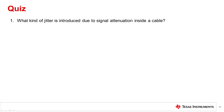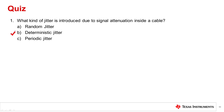Let's take a quick quiz. Number 1: What kind of jitter is introduced due to signal attenuation inside a cable? A. Random jitter. B. Deterministic jitter. Or C. Periodic jitter. The answer is B, deterministic jitter. Since signal loss of a cable is defined and deterministic, the cable will attenuate the signal in a specific deterministic way, thus creating deterministic jitter.